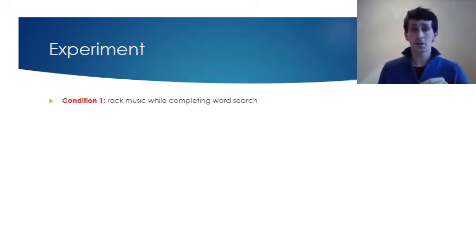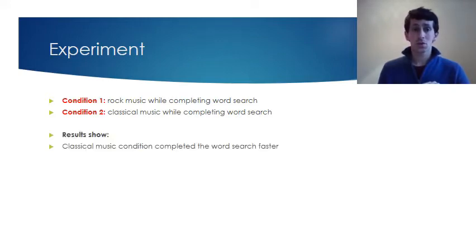So in the experiment, we've got our first condition, they do rock music while completing the word search as quickly as they can. Second condition, they listen to classical music while trying to complete the word search. And results show that classical music condition, they completed it faster. So most people in that second condition completed a word search faster.